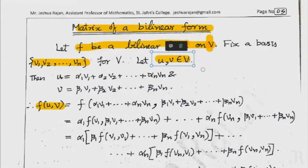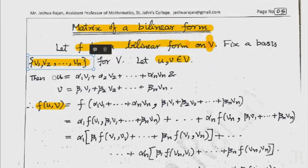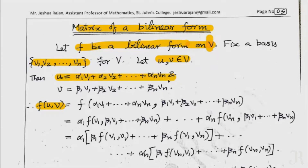Then any vector in V is a linear combination of the basis v1, v2, ..., vn. So u equals alpha1 v1 plus alpha2 v2 plus ... plus alpha_n v_n, and v equals beta1 v1 plus beta2 v2 plus ... plus beta_n v_n.